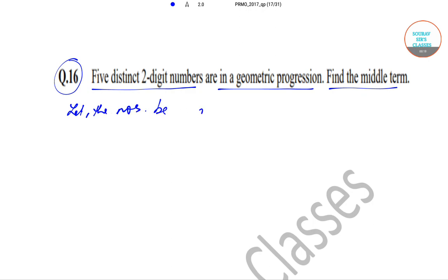Let the numbers be a, ar, ar², ar³, and ar⁴. They are in GP. Now, all of these five numbers are two-digit numbers.